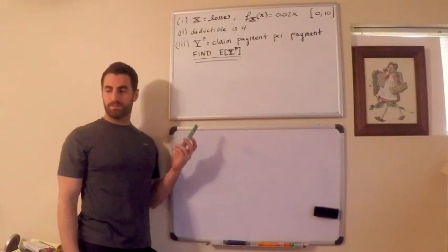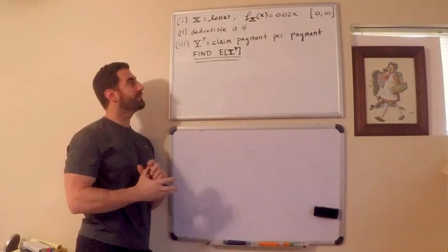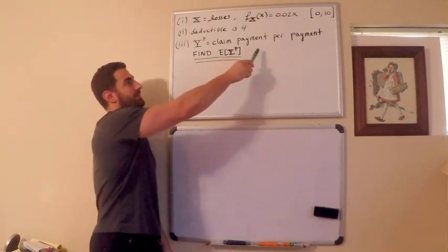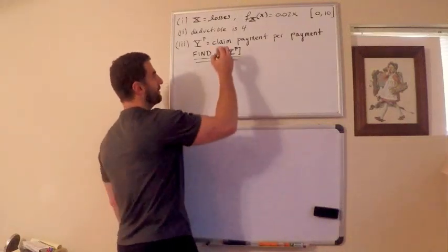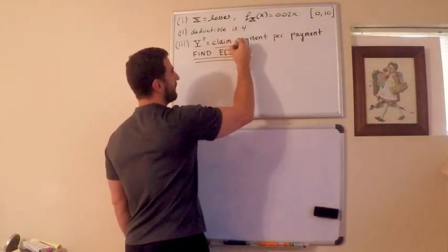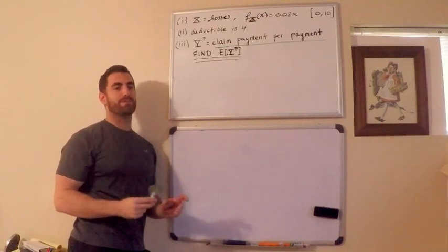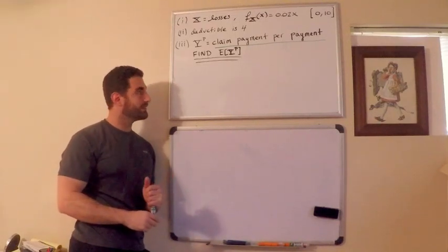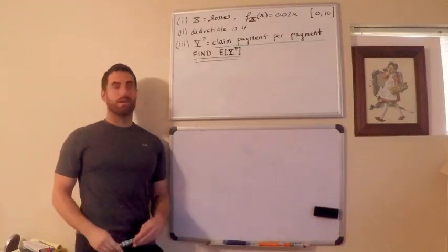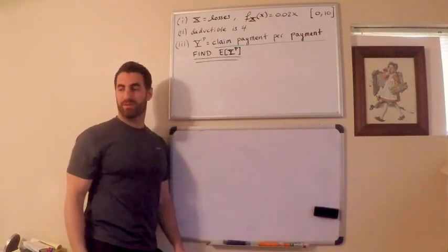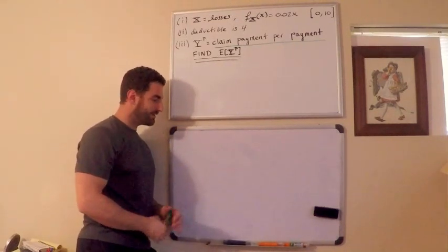Now, I have a new random variable, and I call it Y^p. This is all given in the question. Y^p is the claim payment per payment. This is the important part that I personally can screw up. If you're given this particular random variable, you have to be very careful about your interpretation. Hopefully we can shed light on this and it'll make sense.